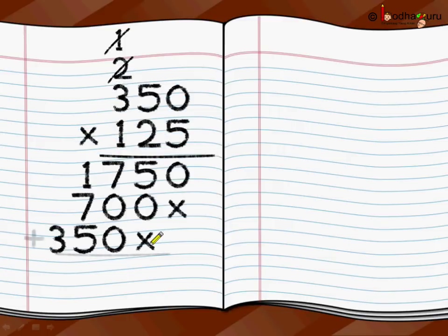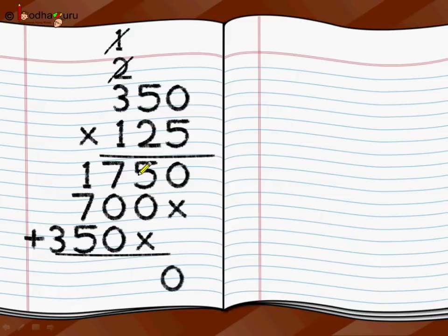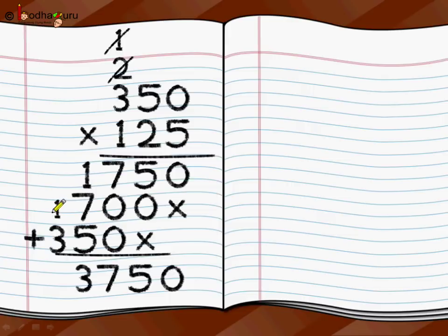Now we are going to do addition of all these three products. Starting from the ones position: 0 plus 0 plus 0 is 0. Then 0 plus 0 plus 0 is 0. Then 5 plus 0 plus 0 is 5. Next position: 7 plus 0 plus 0 is 7. Then 1 plus 7 is 8, and 8 plus 5 is 13 — so we write 3 here and 1 goes as carry over. Then 1 plus 3 is 4. So the villagers collected 43,750 rupees by this process.